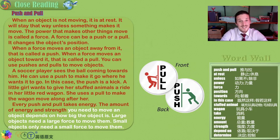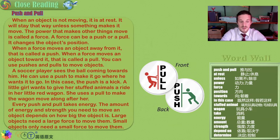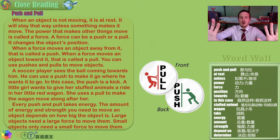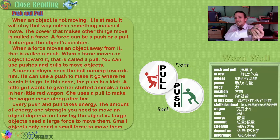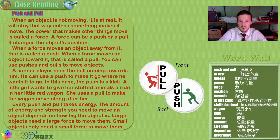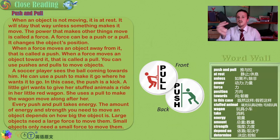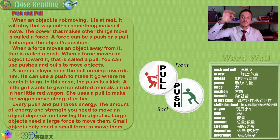Every push and pull takes energy. It takes energy to move something. The amount of energy and strength you need to move an object depends on how big the object is. The bigger the object, the more energy is required. Think about pushing a big rock or pulling a sled — if it's very big, it might even be impossible because it's too much strength for you. Large objects need a large force to move them, and similarly, small objects need only a small force.